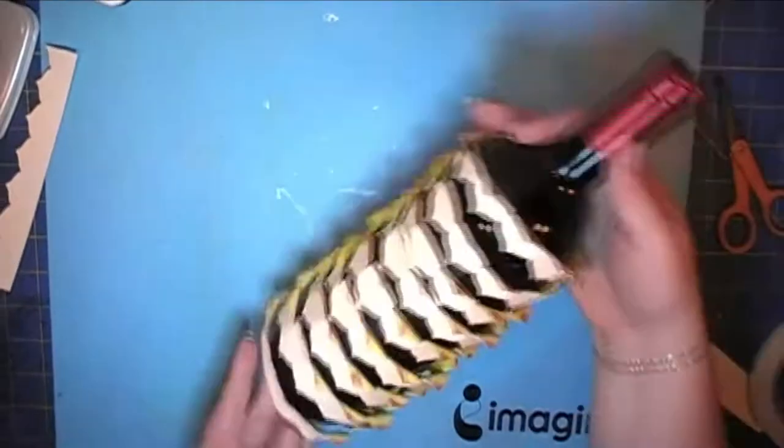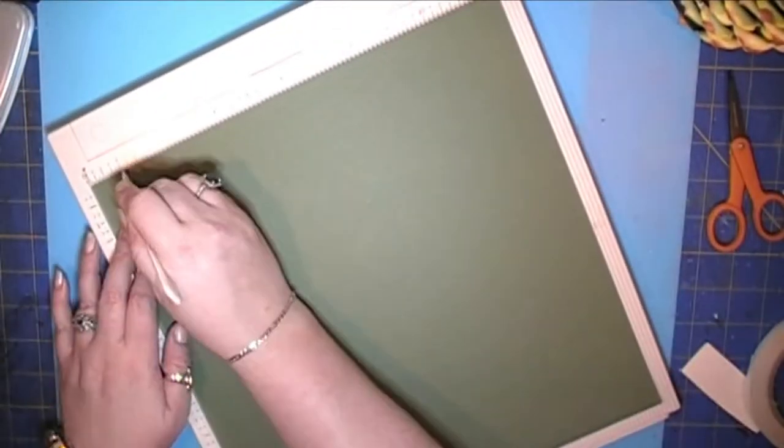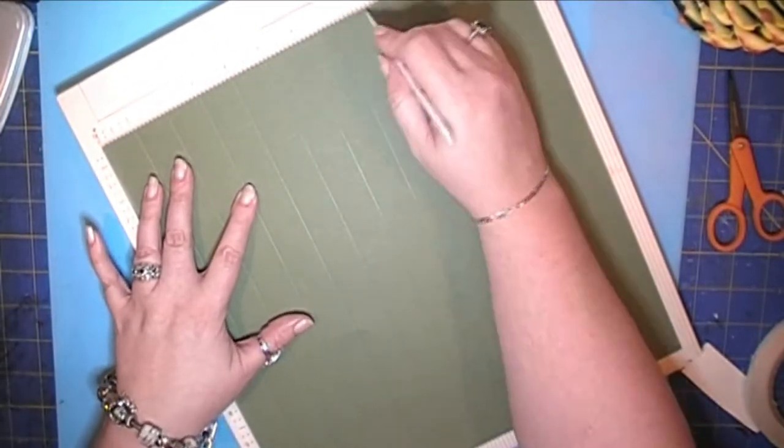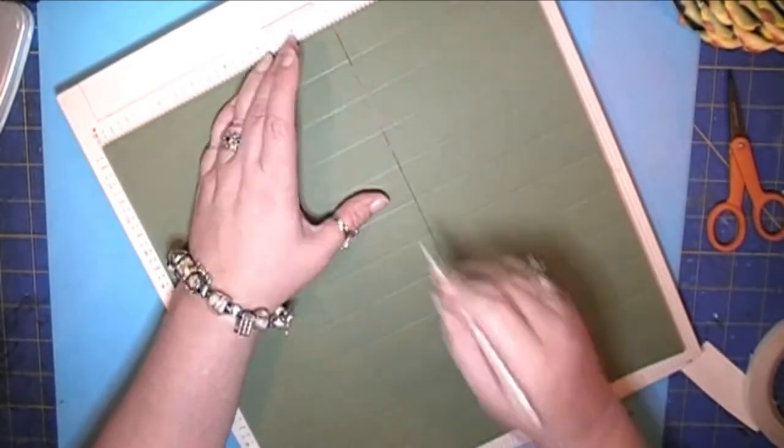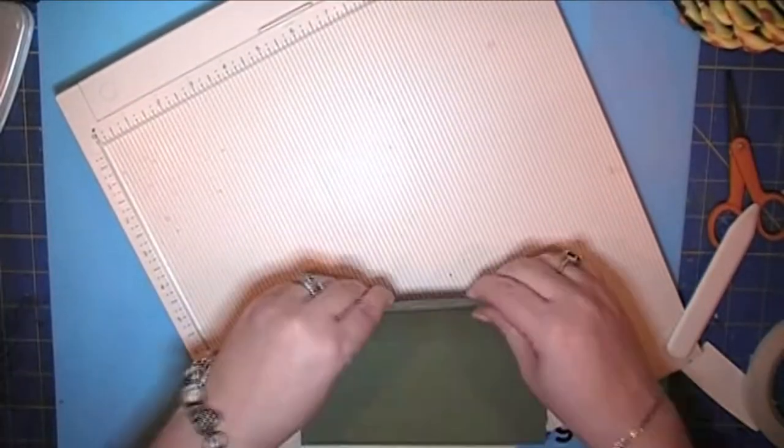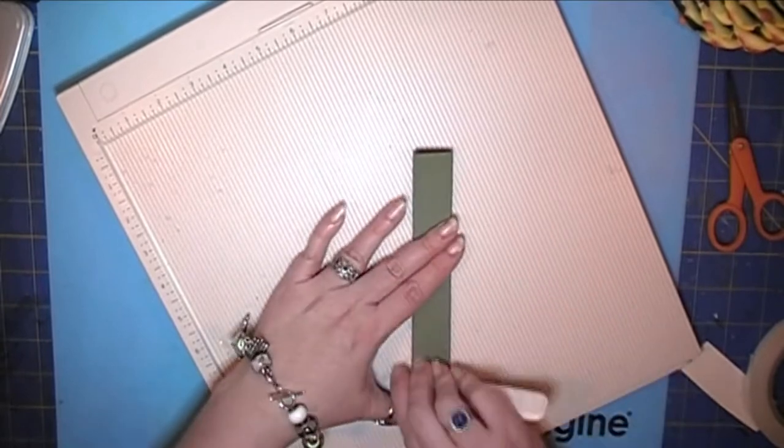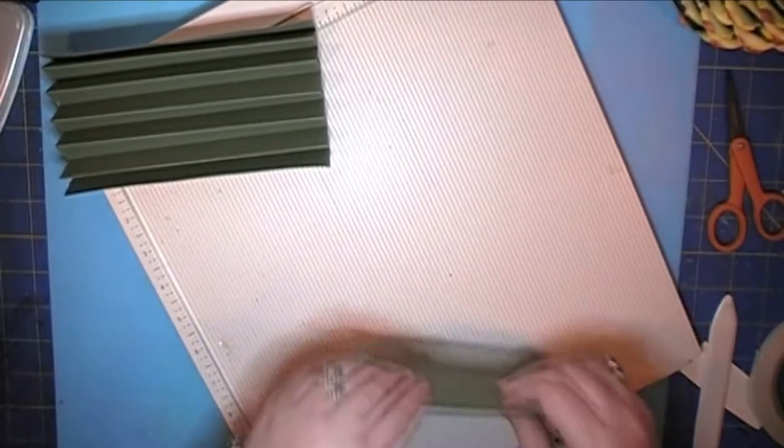I rolled the points down over the handle of a paintbrush to kind of give them that look that the outside of a pineapple has, and then I fit it around the wine bottle, securing it with a piece of tear-off tape.